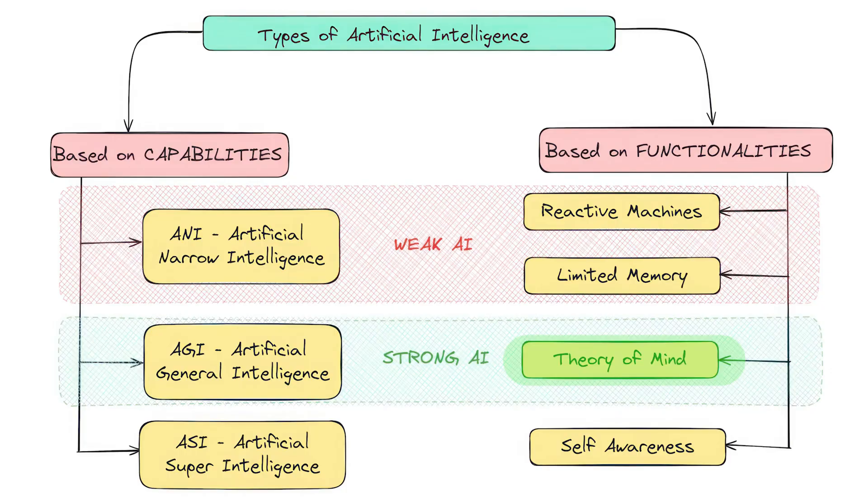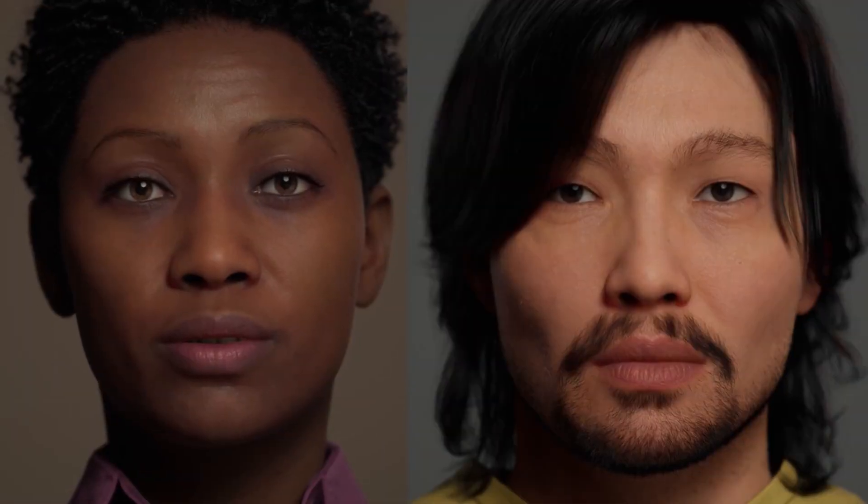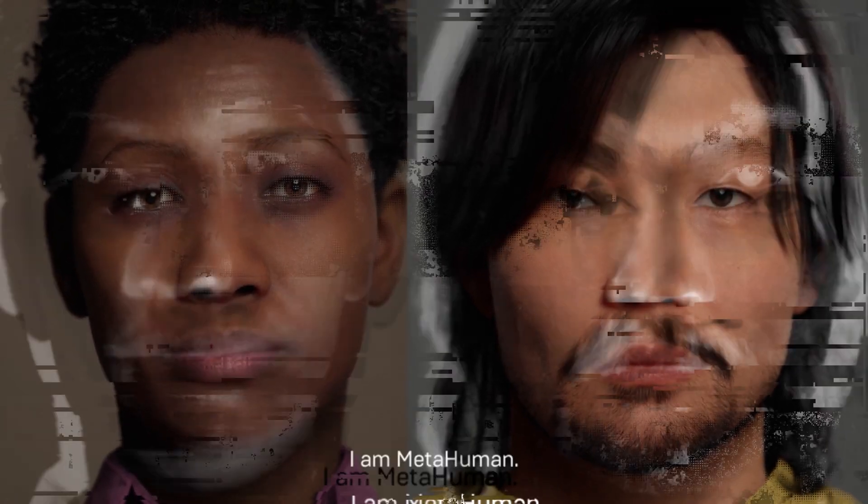This is all that exists today. From here onward, we move to theoretical AI which has not been realized yet. The first one being Theory of Mind — this would be able to understand the thoughts and emotions of humans and would enable more sophisticated, human-like interaction. In other words, it is also called AGI.